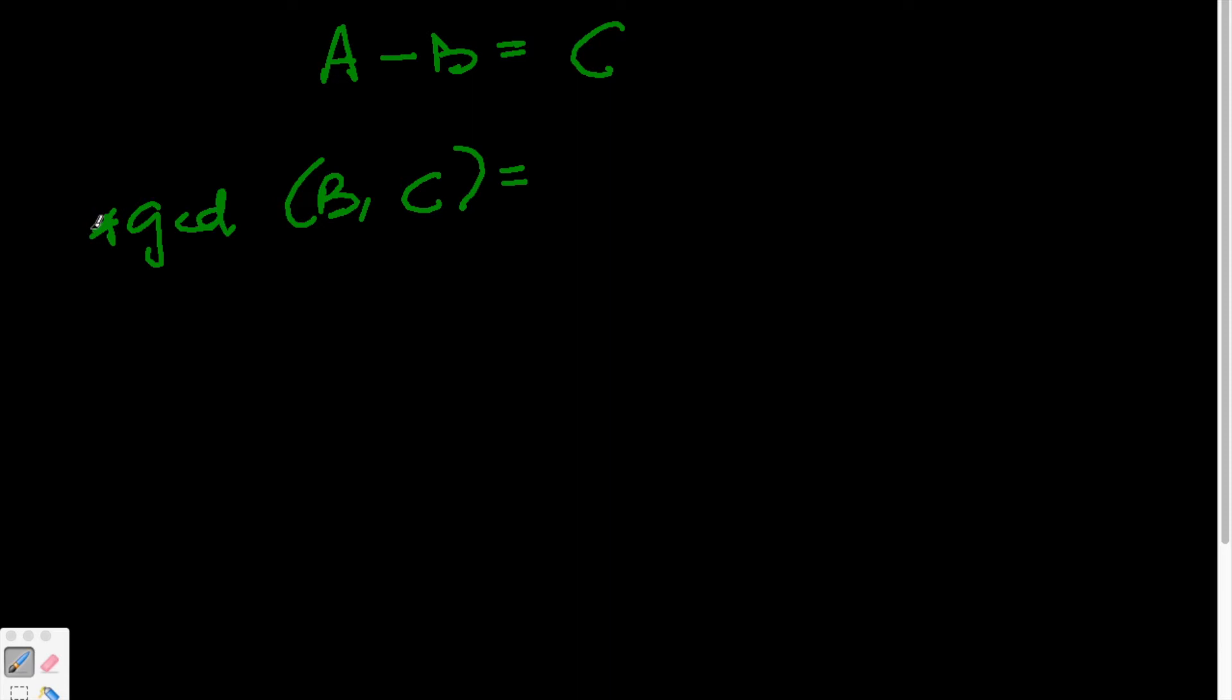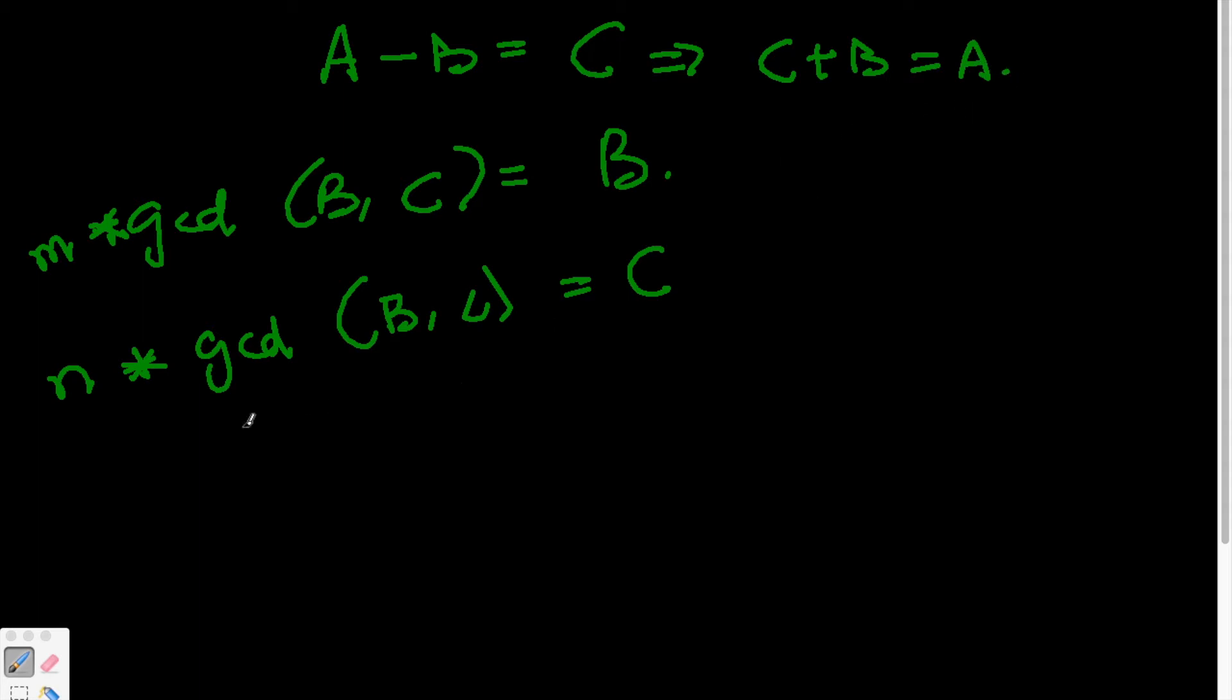So let's say when it is multiplied by a number m, it gives you B. And when multiplied by a number n, gcd(B,C) gives you C. Also, instead of A-B equals C, let's put it as C+B equals A.